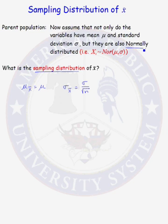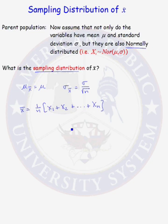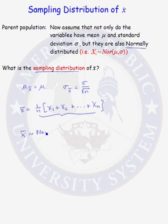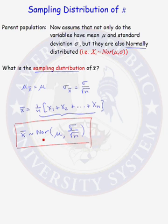Because the parent population is normally distributed, we can figure out the distribution of our sample mean. We write our sample mean as 1 over n times x1 plus x2 plus xn. This is a linear combination of normal random variables, and we know that a linear combination of normal random variables will also be normal. So the distribution of x-bar will be normally distributed with mean mu and standard deviation sigma over the square root of n. This is true if our parent population is normally distributed, and we now have the sampling distribution of x-bar.